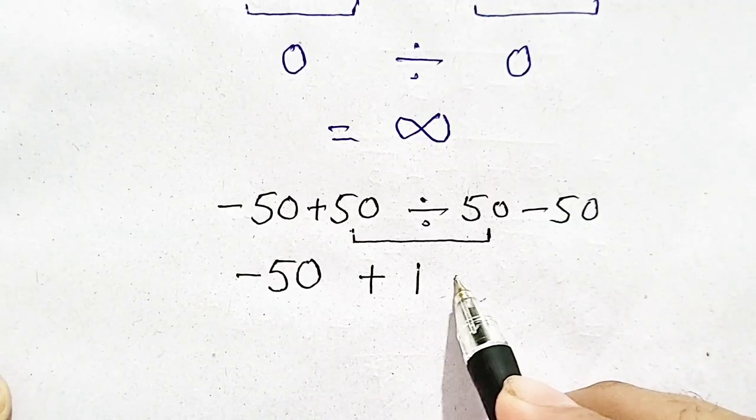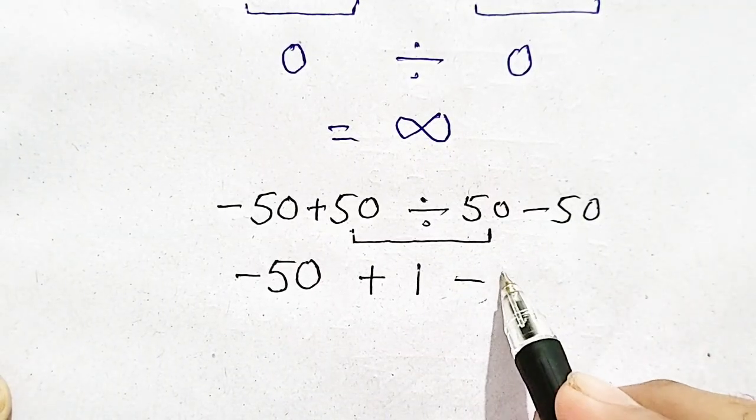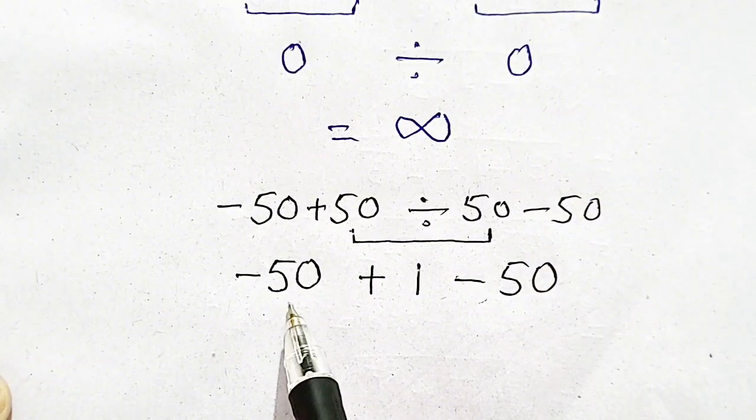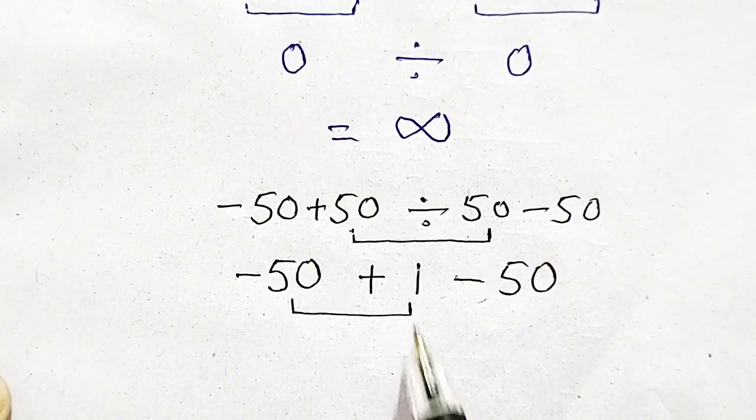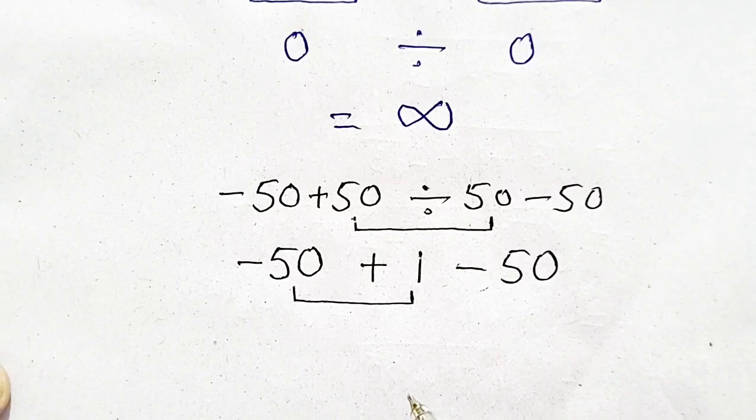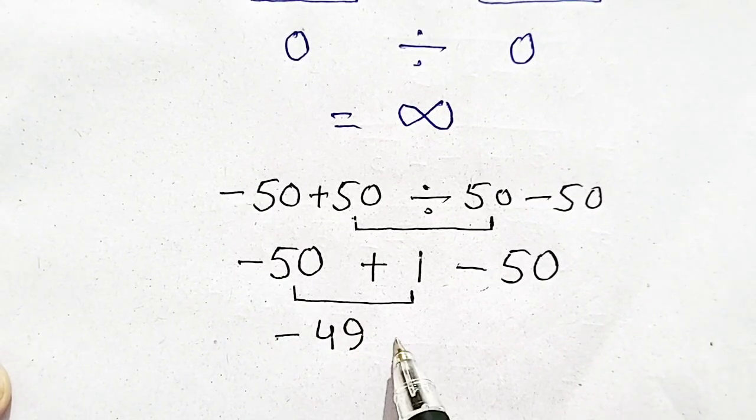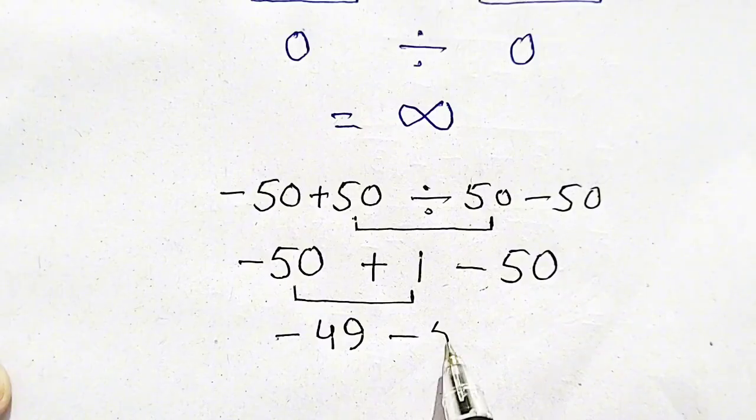The left term is minus 50. So minus 50 plus 1 will be equal to minus 49, and here is minus 50.